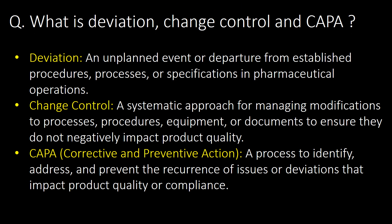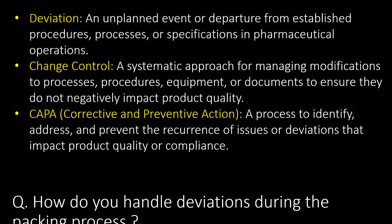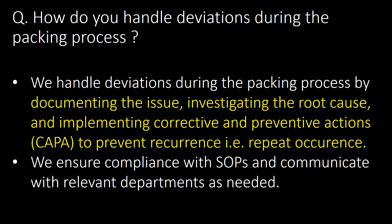What is deviation, change control, and CAPA? Deviation is an unplanned event or departure from established procedures, processes, or specifications in pharmaceutical operations. Change control is a systematic approach for managing modifications to processes, procedures, equipment, or documents to ensure they do not negatively impact product quality. CAPA (corrective and preventive actions) is a process to identify, address, and prevent the recurrence of issues or deviations that impact product quality or compliance. Deviations during packing are handled by documenting the issue, investigating the root cause, and implementing CAPA to prevent recurrence.